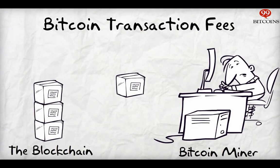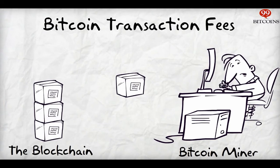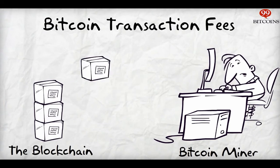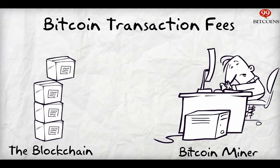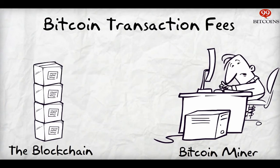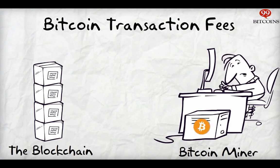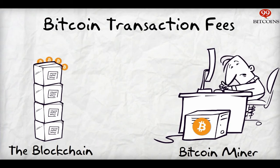When miners order transactions into blocks inside the blockchain, they get paid twice. The first payment is what you would call the system, which grants them a bounty for succeeding and entering their block of transactions. The second payment is the fees the user attached to the transactions that got included in that block.